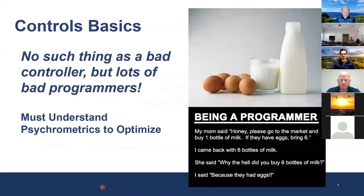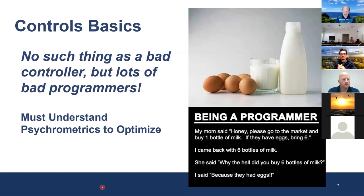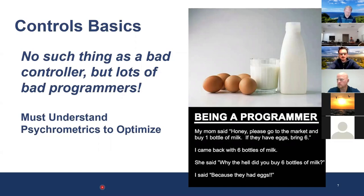Another aspect of controls basics: there is no such thing as a bad controller, but there are a lot of bad programmers. We have to understand the psychrometrics to optimize. It's very specific on semantics — like the programmer who went to the store and came back with six bottles of milk because mom said 'if they have eggs, bring six.' No eggs, but six bottles of milk. That's exactly the controls world. You have to understand what you're trying to accomplish. The one thing I'll say is that we truly make controls overcomplicated. My talk today is really to try and make it less complicated and get back to basics.